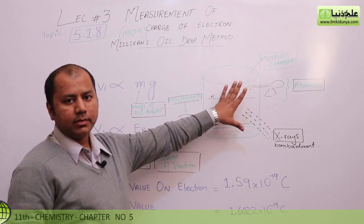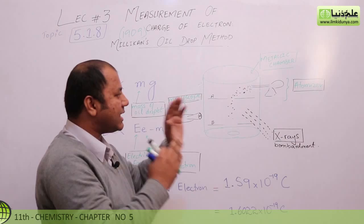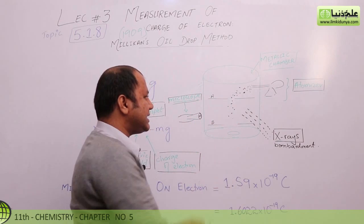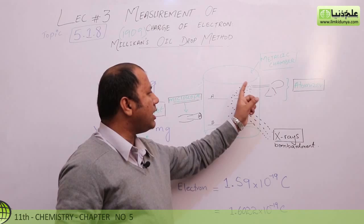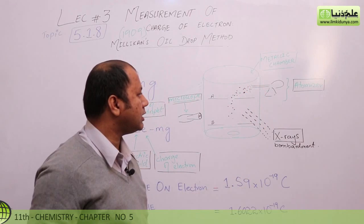I will try to explain this topic to you. You can see that I have made a diagram. This is a metallic chamber — let's just think of this as a metallic chamber. In this metallic chamber we have adjusted different things. Let's say that here we have put an oil spraying machine.